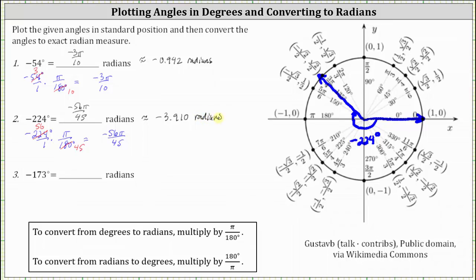For the last example, we have negative 173 degrees. The initial side is along the positive x-axis. Half a rotation clockwise is negative 180 degrees. This indicates negative 173 degrees is seven degrees short of half a rotation clockwise. The terminal side would be approximately here.